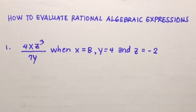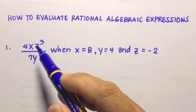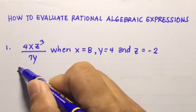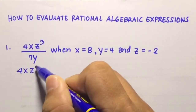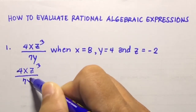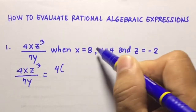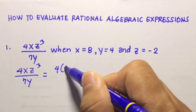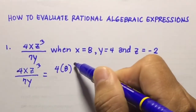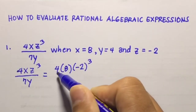So what we're going to do here is substitute these values of the variables into the given expression. We're going to have 4xz cubed over 7y, which will be equal to 4 times 8 — since x is 8 — then z cubed, where z is negative 2, so we have negative 2 cubed.